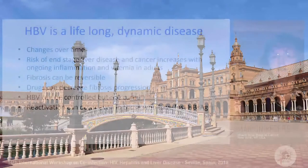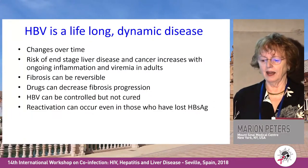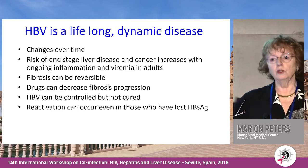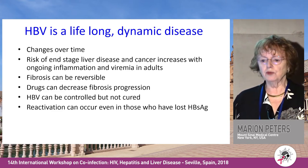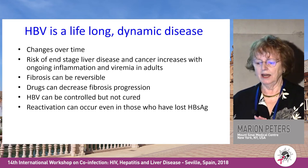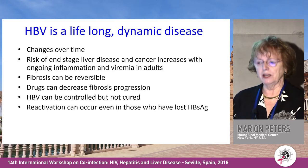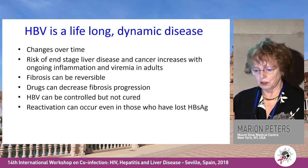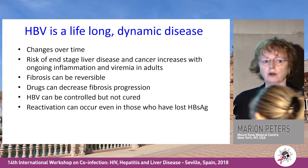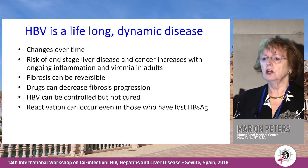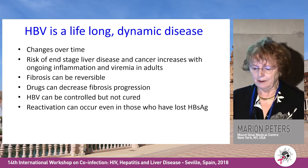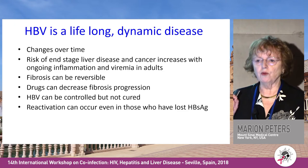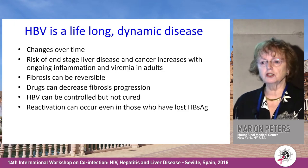Hepatitis B is a lifelong dynamic disease that changes over time, unlike hepatitis C which progresses over time. The risk of end-stage liver disease and cancer increases with ongoing inflammation and viremia. Cirrhosis can be reversible — drugs decrease fibrosis progression and can even reverse cirrhosis. Hepatitis B can be controlled but not cured, and reactivation occurs even in those who have lost surface antigen.